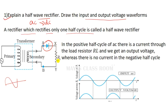Current flows through the load resistance. In the positive half-cycle of AC, there is current through the load resistor RL and we get an output voltage. Whereas there is no current in the negative half-cycle. That is the half-wave rectifier. We can see the input waveform and output waveform.